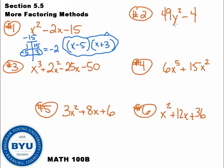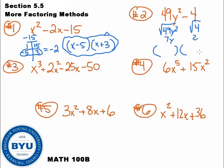Number two: any common stuff? Does anything come out of 4 and 49? No. Count the terms: two terms. When I have a two-term polynomial, I look for perfect squares. Square root of 49y squared is 7y — that's a perfect square. Square root of 4 is 2 — that's a perfect square. And we have subtraction. So this factors to 7y plus 2 and 7y minus 2.